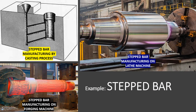We can manufacture a product with the help of a number of processes, but only one is good from an economic point of view. For example, you can manufacture a step bar with the help of a forging process, casting process, or machining process. All these processes give different results at the end.